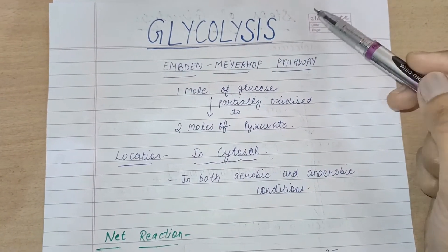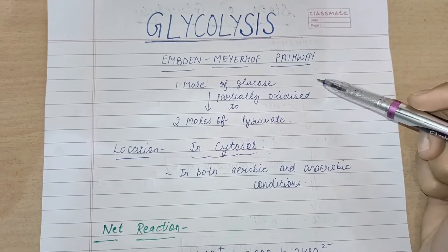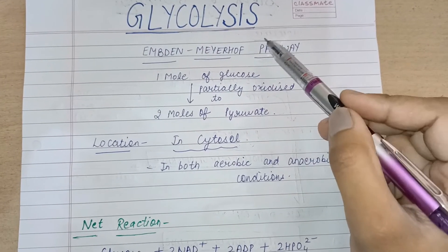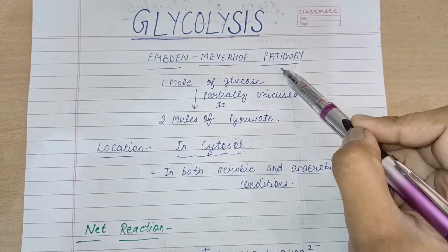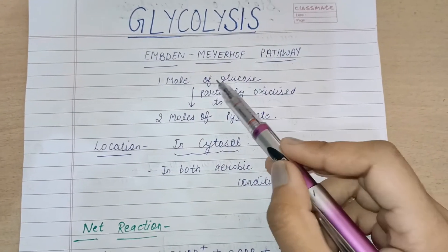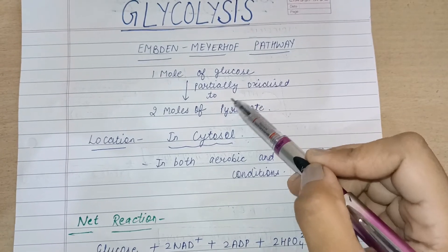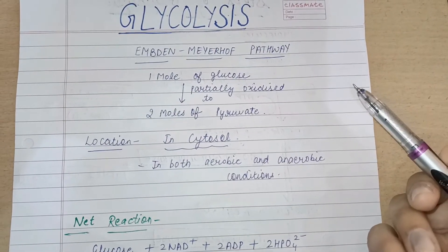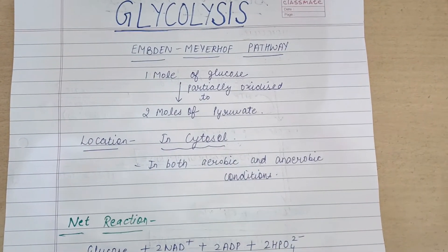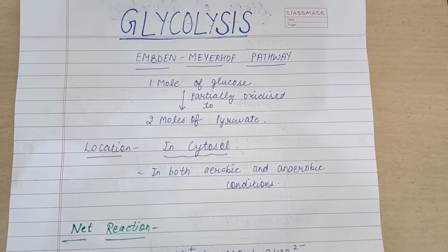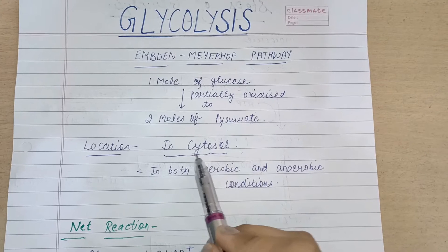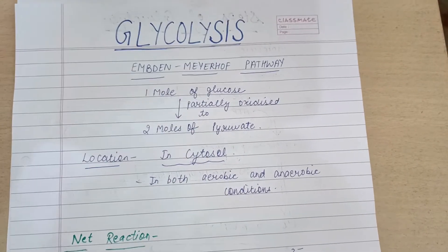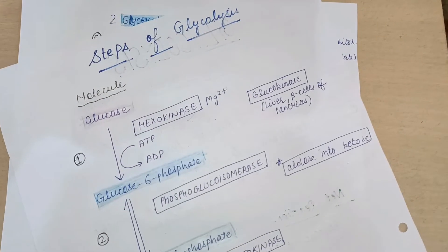Hello friends, today I am going to discuss glycolysis. Glycolysis is the first step of aerobic respiration and is also known as the Embden-Meyerhof pathway. During glycolysis, one mole of glucose is partially oxidized to two moles of pyruvate. Glycolysis occurs in the cytosol in both prokaryotes and eukaryotes, so the location of glycolysis is the cytosol.